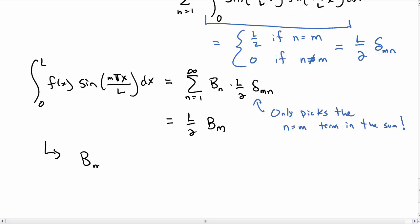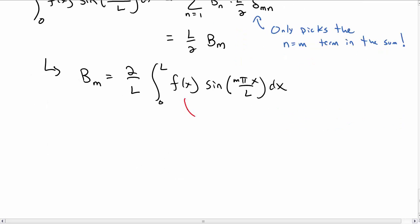And so now we can solve for the arbitrary constant, or the unknown constant, b sub n, and we get a result as 2 over L integral from 0 to L, the function times sine of m pi x over L dx.